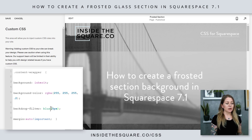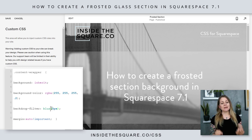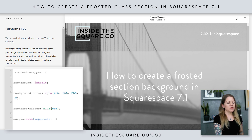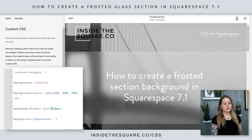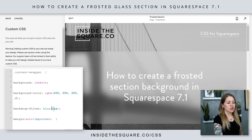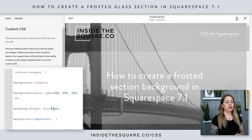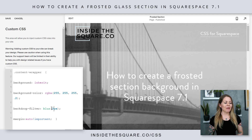If I change that to 0.8, it'll be an even thicker color, or if I change it to 0.2, it'll be even more transparent. After that, we have the blur — this is how much of a blur is applied to that background image. I can change that to 15 if I want it to be super blurry, or I can change it down to 2 if I want it to be barely blurry at all. Adjust that however you'd like.